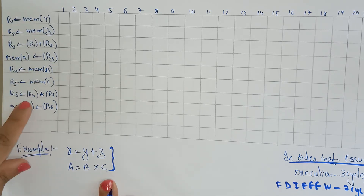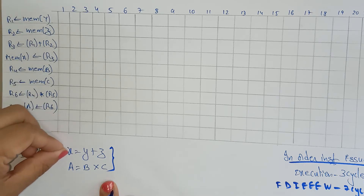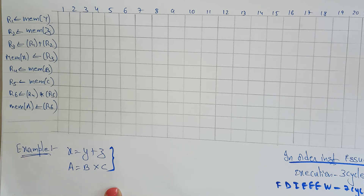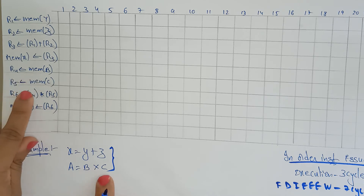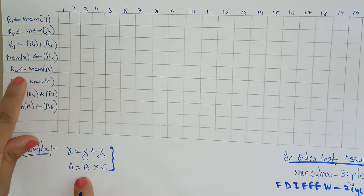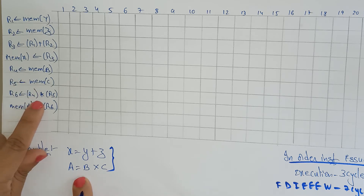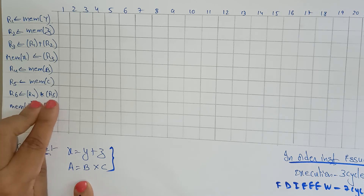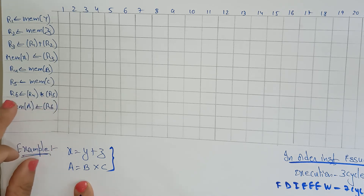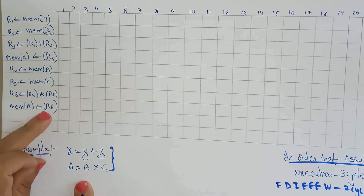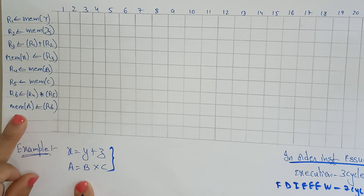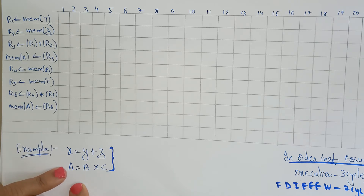The content of r3, which holds the addition result, is moved to the memory location of x. Now x contains the value of y + z. Following in-order issuing, the first instruction must complete before the second begins. For the second instruction: the address of b is moved to r4, the address of c is moved to r5, the content of r4 is multiplied with the content of r5, the result is stored at r6, and then the value in r6 is moved to memory location a — so a stores the result of b × c.